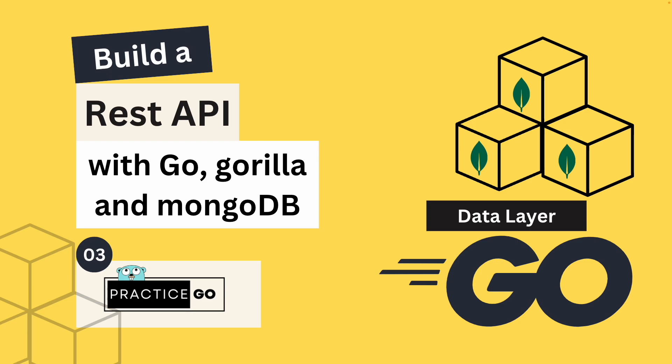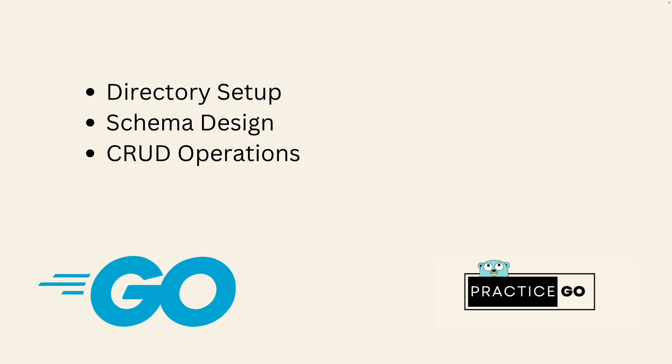Welcome back to the channel. This is chapter 3 of building a REST API with Golang, Gorilla, and MongoDB. In this chapter, we are going to create a data layer. We'll connect to the MongoDB Atlas account created in the last chapter and add different MongoDB operations. The agenda is: project directory setup, define a schema for our company DB, and add basic CRUD operations. Let's get started.